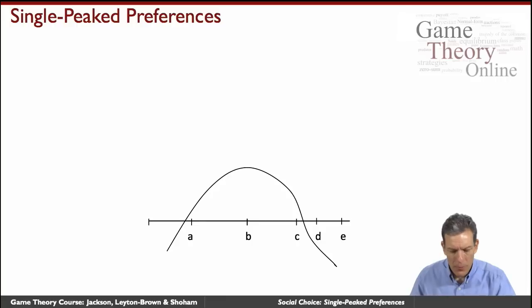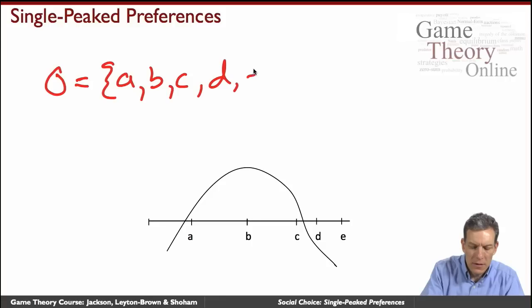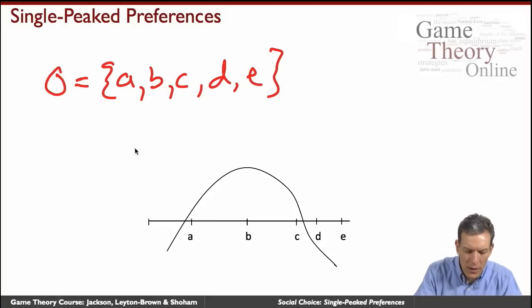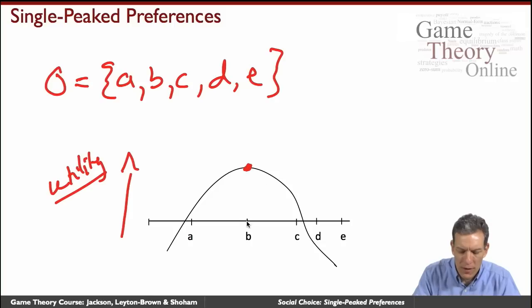So in particular, when we think about our set of outcomes, let's say our set of outcomes here is A, B, C, D, E, and we look at a person who has single peaked preferences, we look at the utility. So here, the utility, the payoff they get from a given alternative, and their most preferred alternative in this case is B, they get the highest.